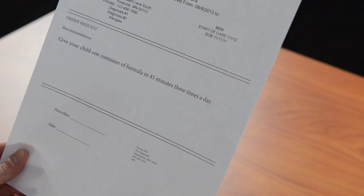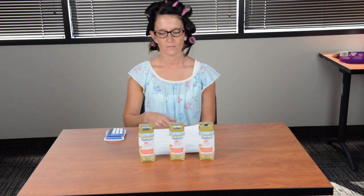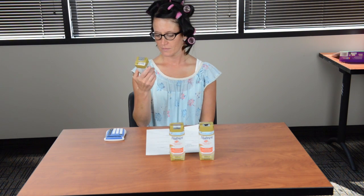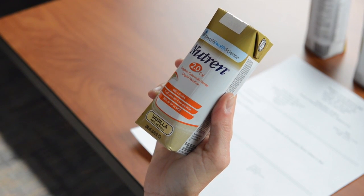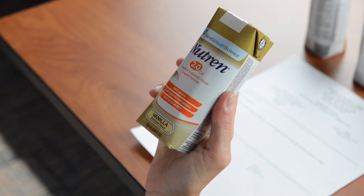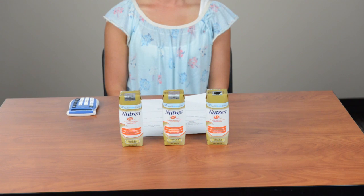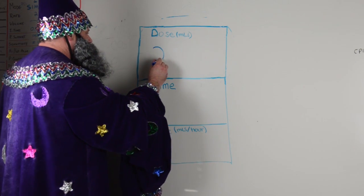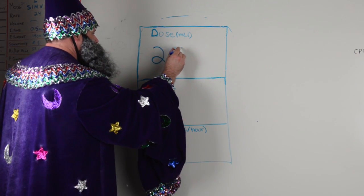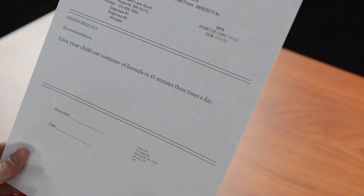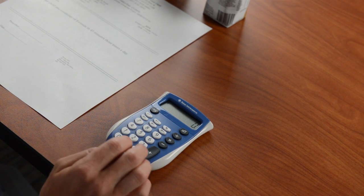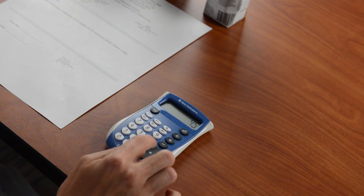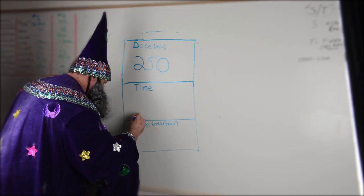The doctor told you to give your child one container of formula in 45 minutes, three times a day. The pump requires that you measure food in milliliters. See the label on the formula container to know if it holds either 237 milliliters or 250 milliliters of formula. For this example, each container contains 250 milliliters. The doctor told you the dose and the time in minutes. The pump requires that you measure time in hours. Since there are 60 minutes in an hour, 45 minutes divided by 60 minutes equals 0.75 of an hour.